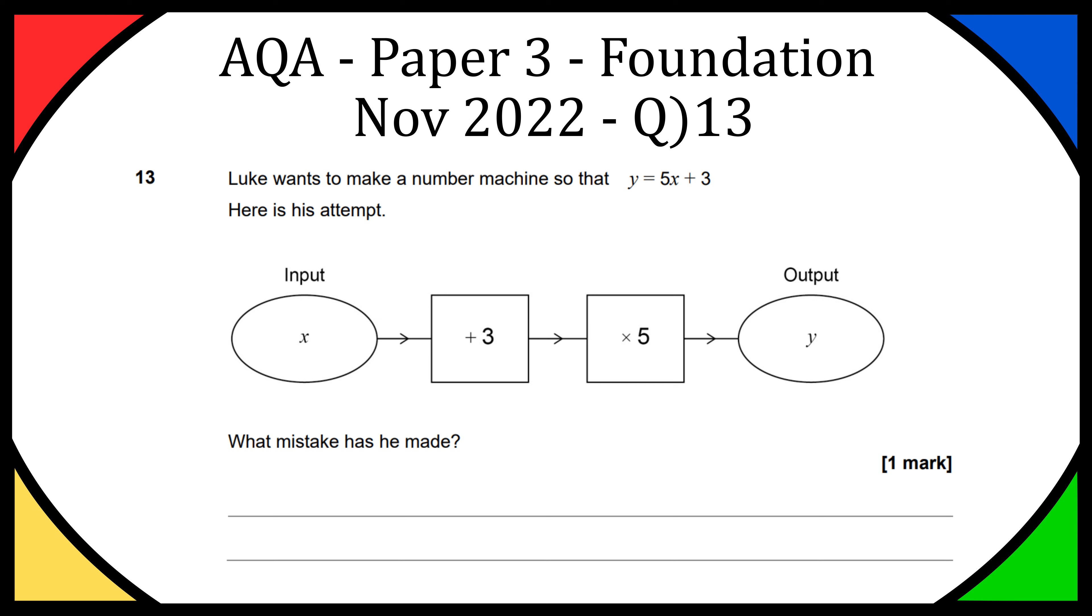What mistake has he made? Let's create a formula for what Luke has done. He's taken x, added 3, and then times that all by 5 and put that equal to y.